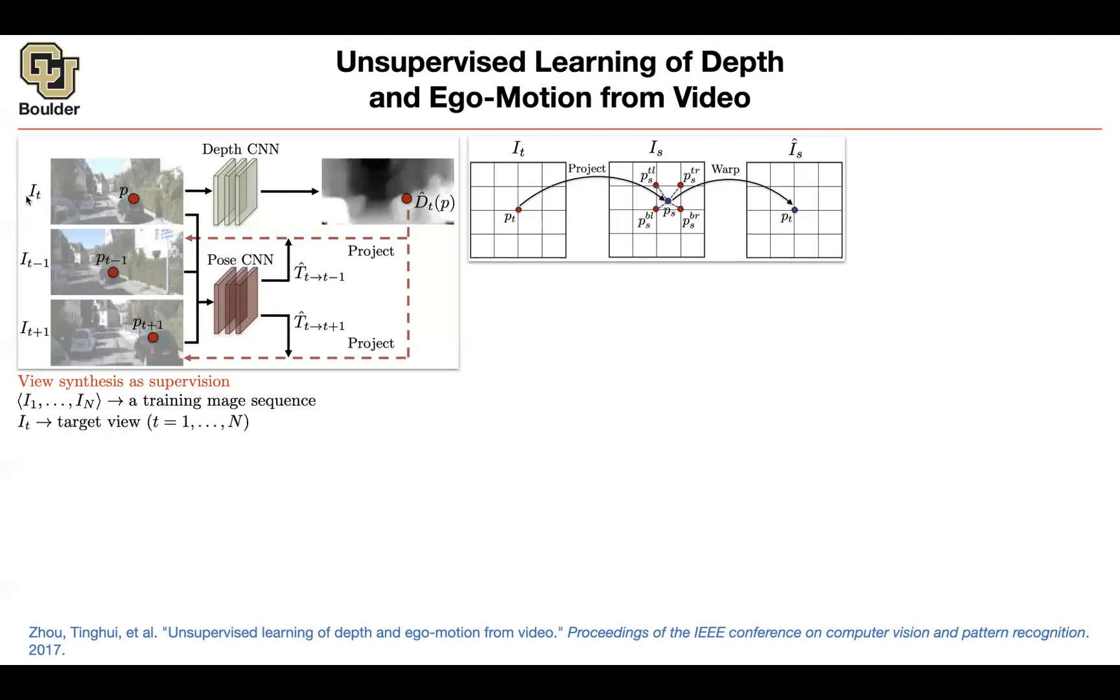You pick a target view. Maybe this is your target view for which you want to predict the depth. And then you are going to have some source views. Maybe the view from the previous time step and the view from the next time steps are two sources. And these have to be different from the target that you chose. So these are different images. One of them is source. The other one is target.